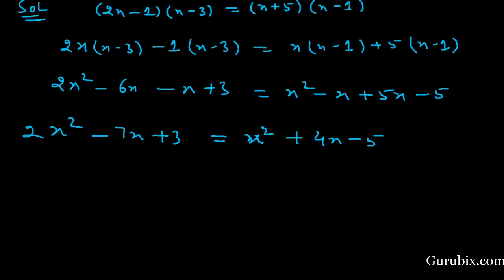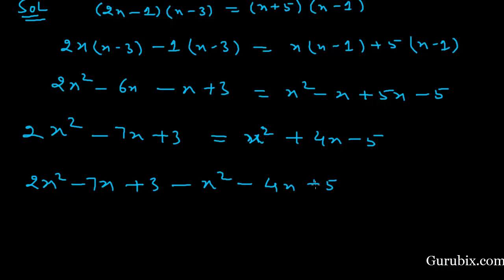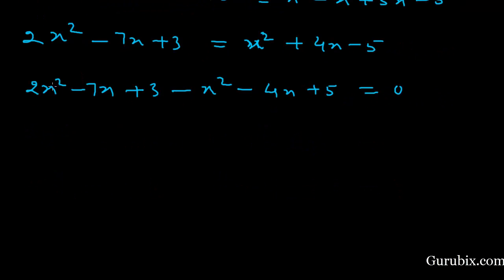Now we shall take the values from the right-hand side to the left-hand side: 2x² - 7x + 3 - x² - 4x + 5 = 0. Subtracting x² from 2x² gives x², and -7x - 4x gives -11x, and 3 + 5 gives 8.